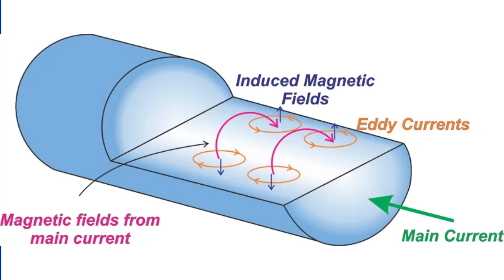These eddy currents are stronger near the core of the conductor, where they create a higher opposing electric field and reduce the net current density. Conversely, near the surface of the conductor, the eddy currents are weaker, resulting in a higher net current density. This uneven distribution of current is what we call the skin effect in transmission lines.